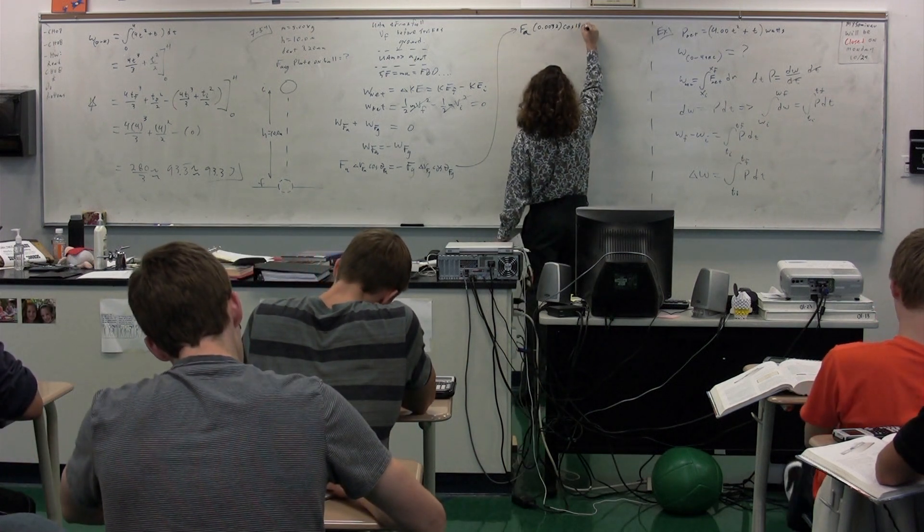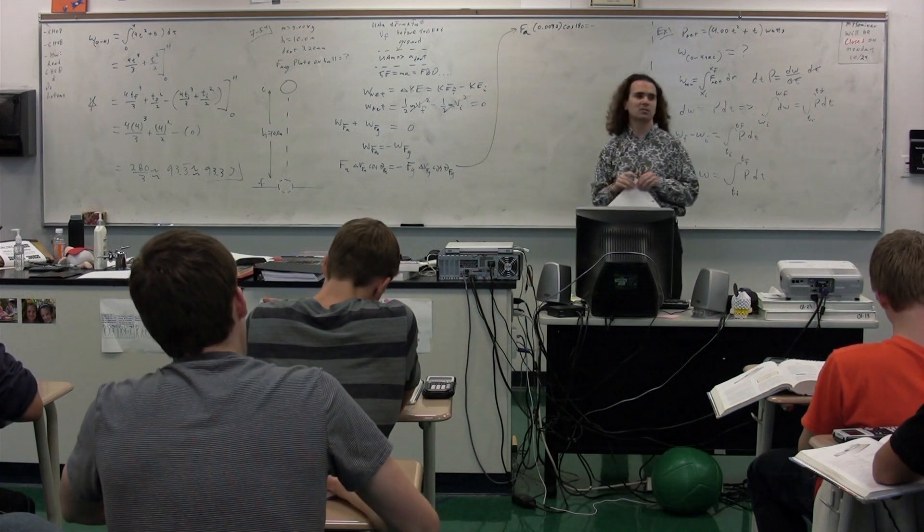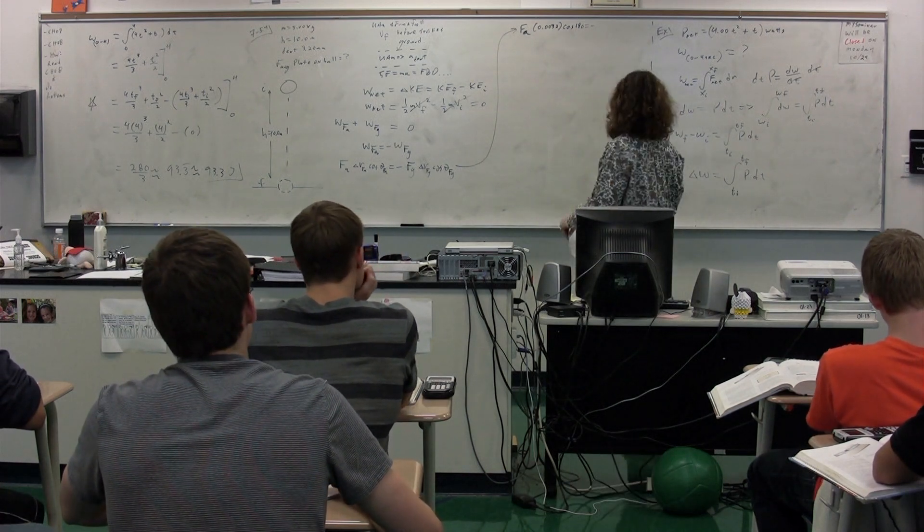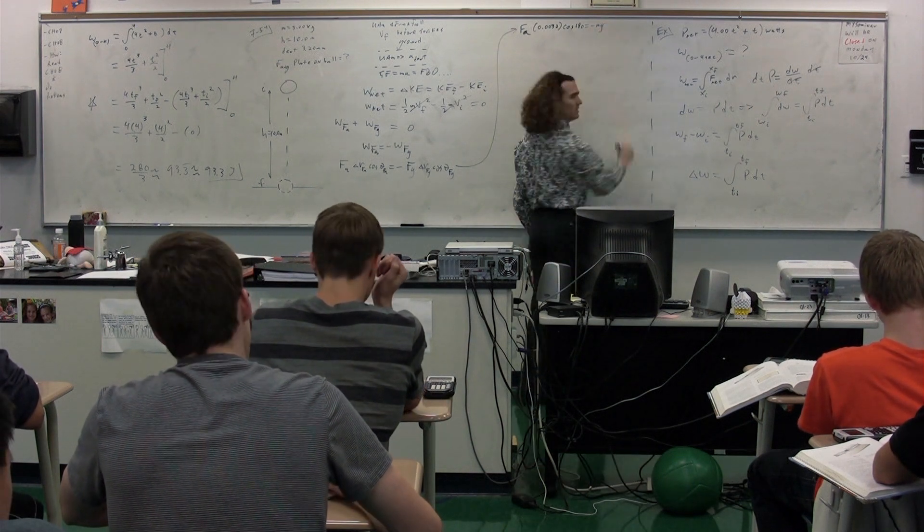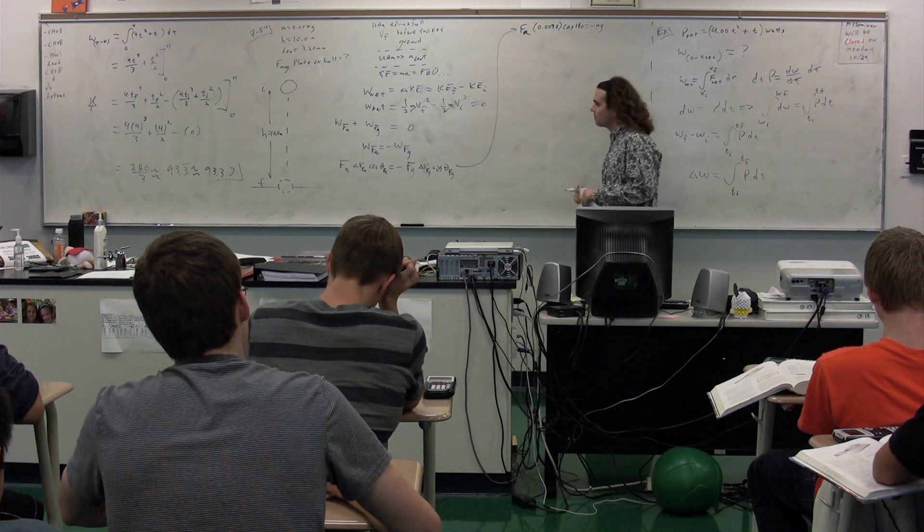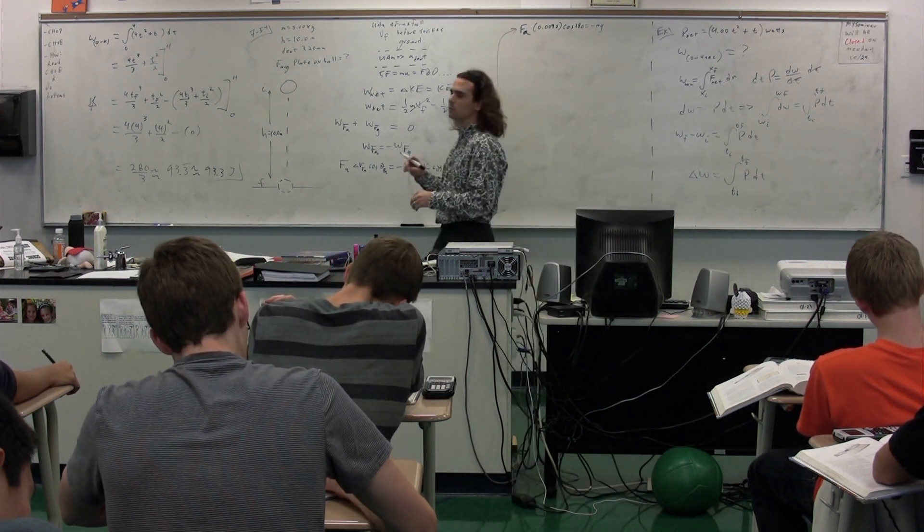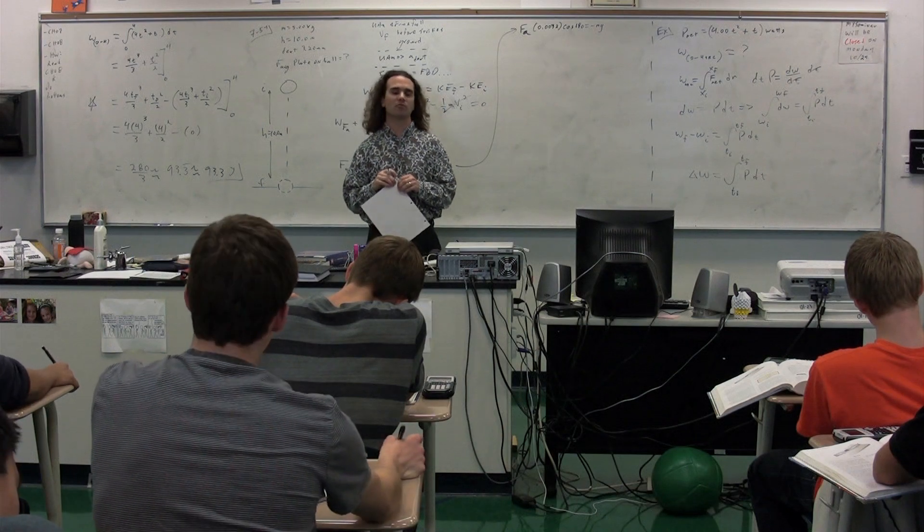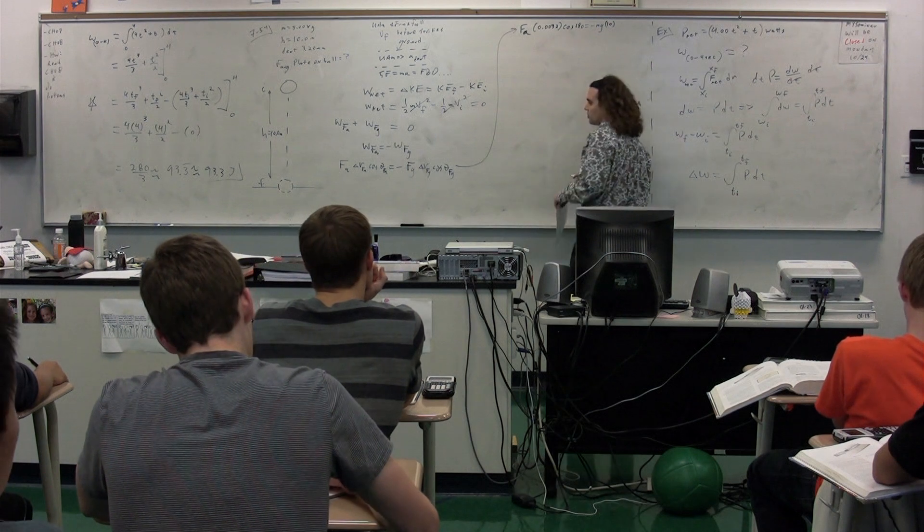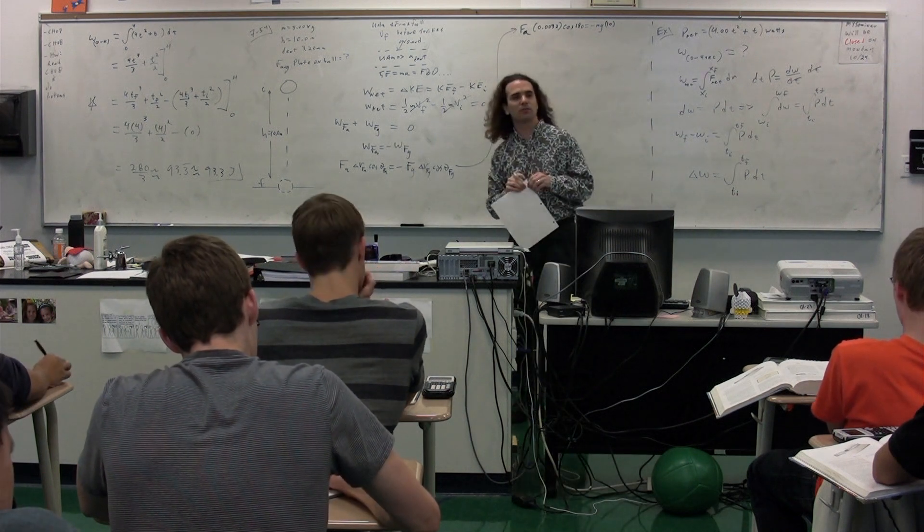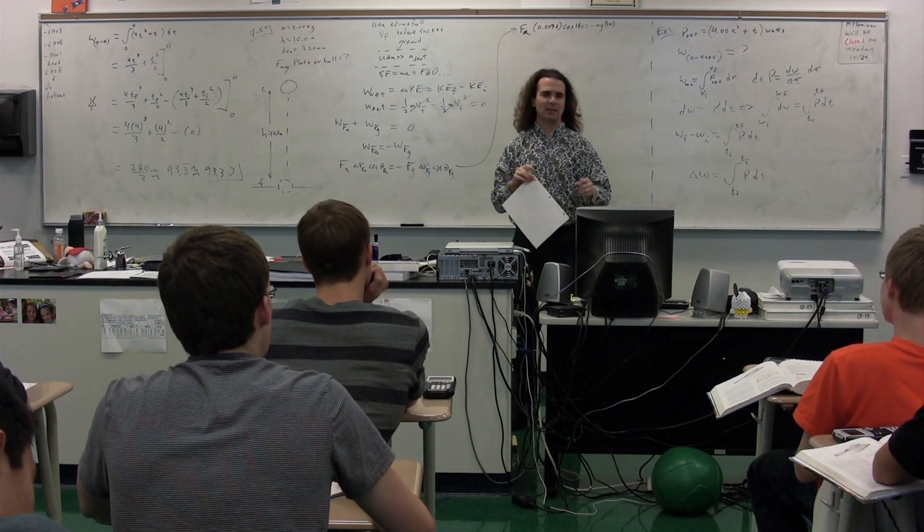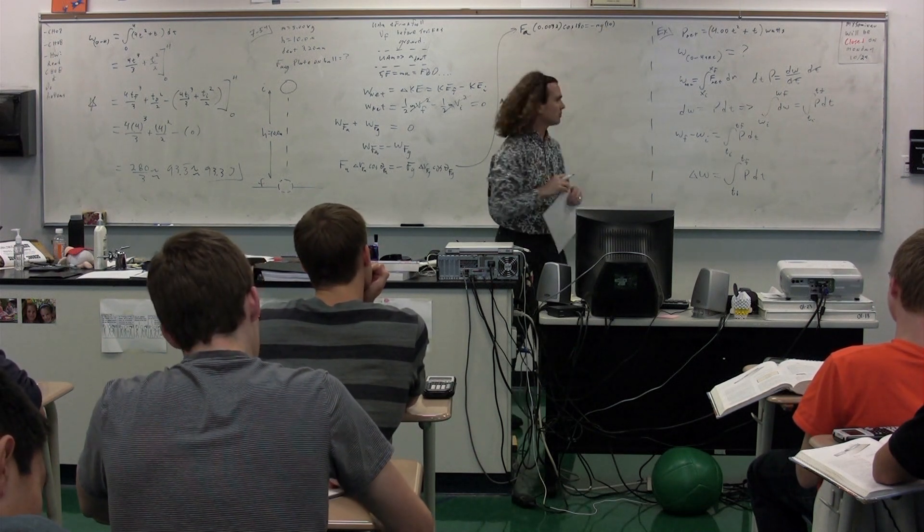Equals the negative of the force of gravity. What's the equation for the force of gravity? Mass times what? G. The acceleration of gravity, little g. And that's the displacement. And now we need the displacement for the force of gravity. What is the displacement for the force of gravity? 10 meters. Times the cosine of the angle between the force of gravity and the displacement. What's the angle between the force of gravity and the displacement? Zero. Zero. They're both down.